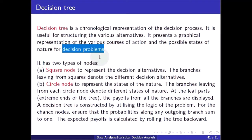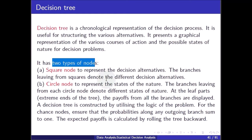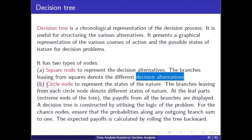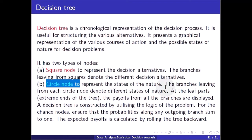It has two types of nodes: square nodes and circular nodes. Square nodes represent the decision alternatives — the branches leaving from squares denote the different decision alternatives. Circular nodes represent states of nature — the branches leaving from each circular node denote different states of nature. At the leaf part, the payoffs from all the branches are displayed.